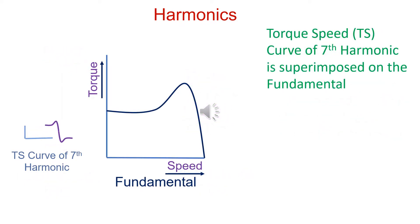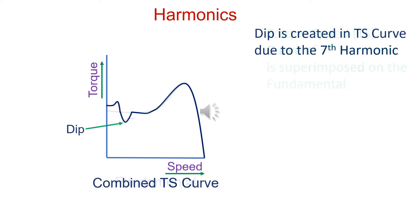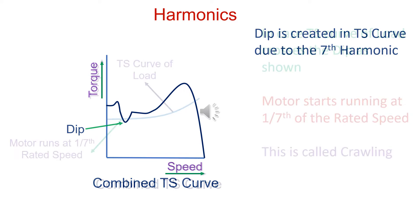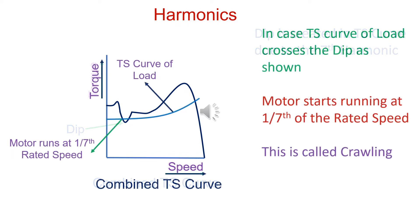The seventh harmonic is superimposed on the torque-speed curve of the motor. A dip is created on the torque-speed curve of the motor. Suppose the load curve crosses the dip. The speed of the motor won't go beyond one-seventh the rated speed. This is called crawling.